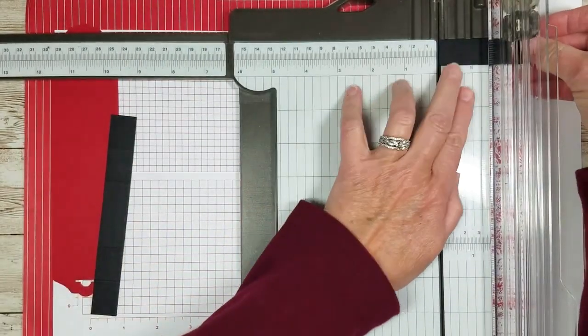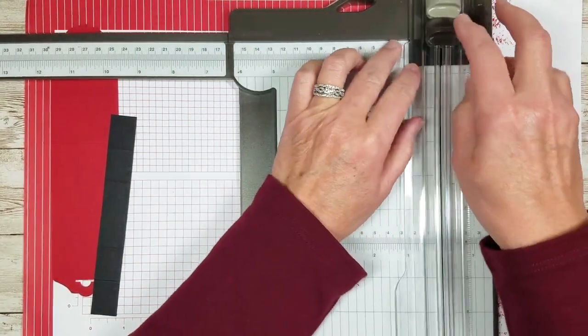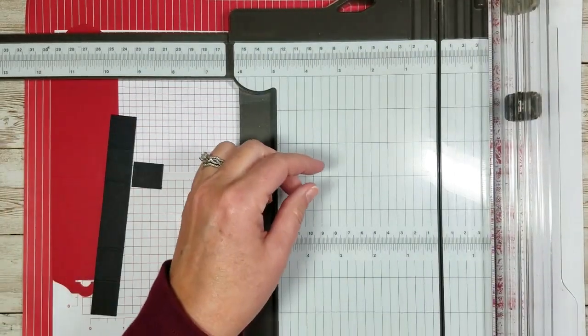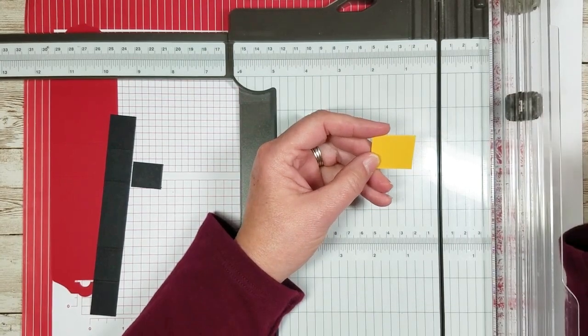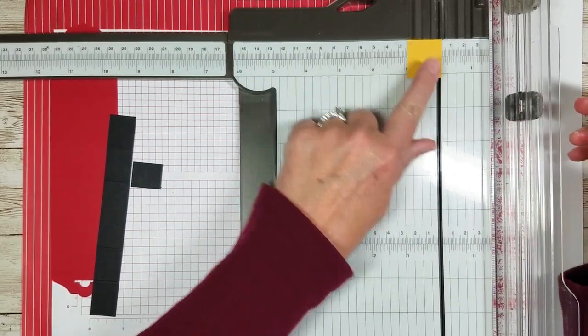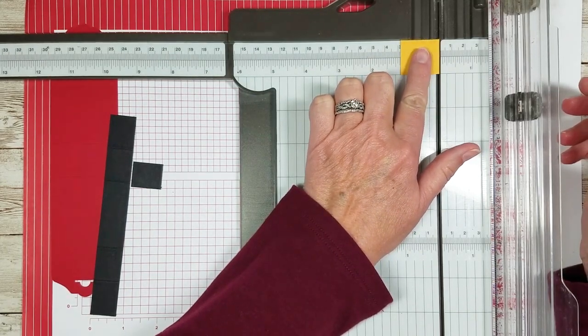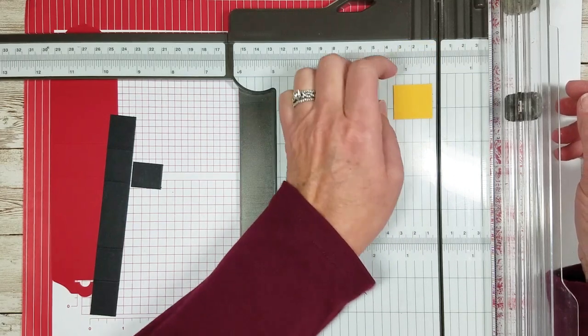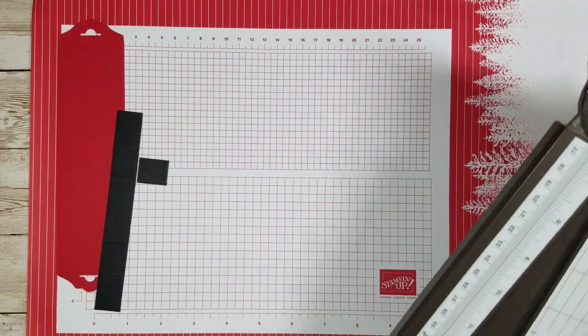We're also going to cut another little piece of black at seven-eighths by three-fourths inch. You also are going to need a piece of yellow or gold or silver, whatever you want, and you're going to cut it at one by one and two-sixteenths. Those little measurements always make me have to think too hard.